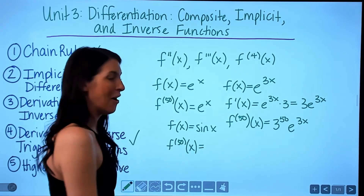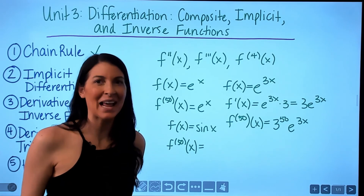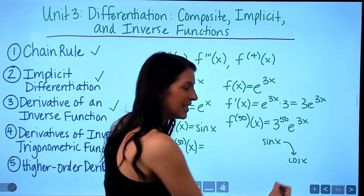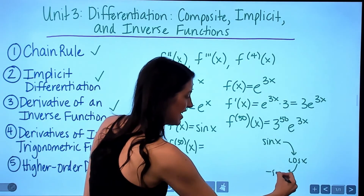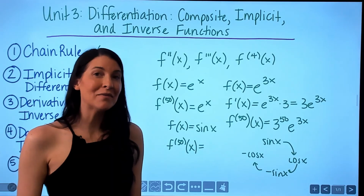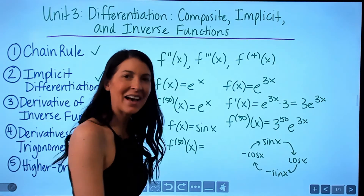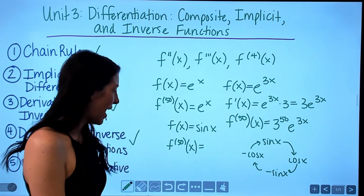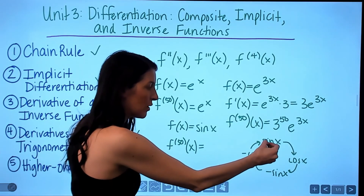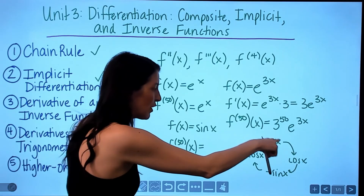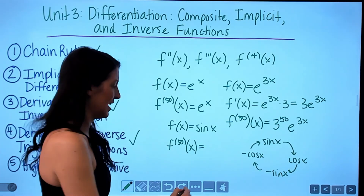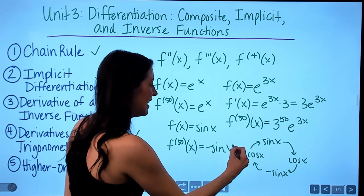Another favorite: if f of x is sine of x, there's a repeating pattern. The 1st derivative is cosine x, the 2nd is negative sine x, the 3rd is negative cosine x, and the 4th is back to sine x. The pattern repeats every 4 derivatives. For the 50th derivative of sine x: 48 is divisible by 4, so the 48th derivative is sine x, the 49th is cosine x, and the 50th is negative sine x.